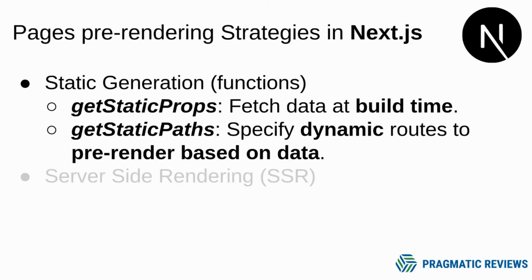For static site generation, Next.js provides two functions that we can use in our pages: getStaticProps and getStaticPaths. With getStaticProps we can fetch data at build time and pass that data to our page. With getStaticPaths we can specify dynamic routes to pre-render based on data, for example using a post ID or a post title. In this video I'm going to show you a couple of examples on how to use these two functions and how to generate a static website in Next.js.